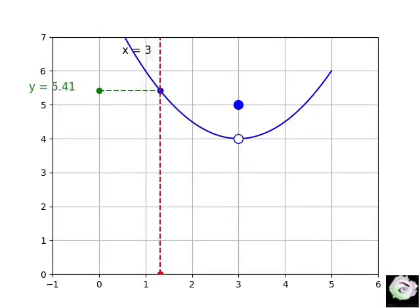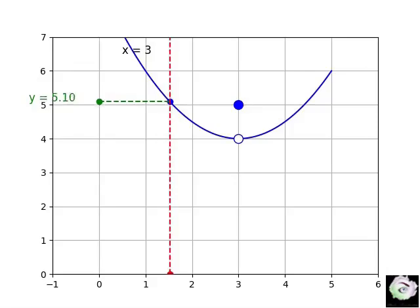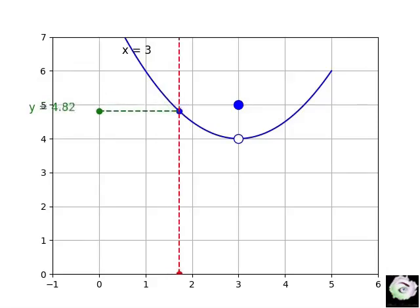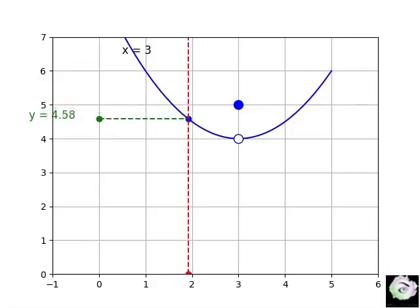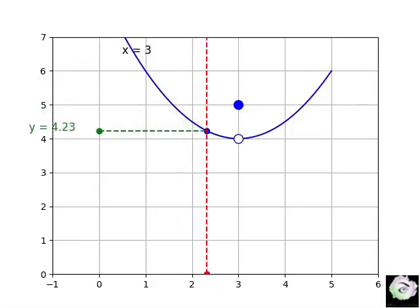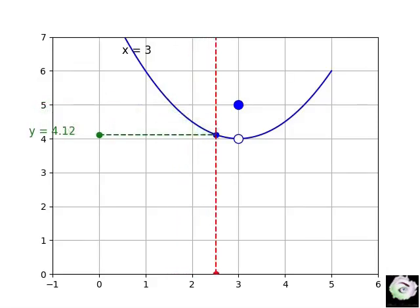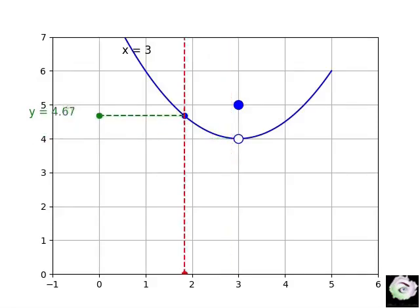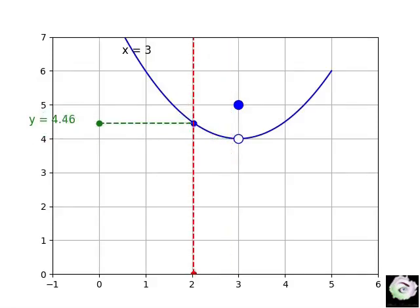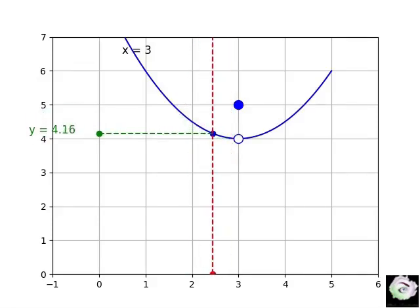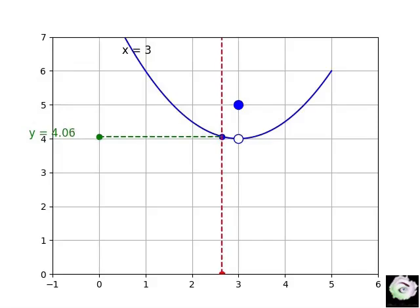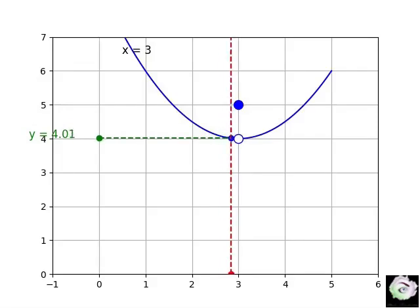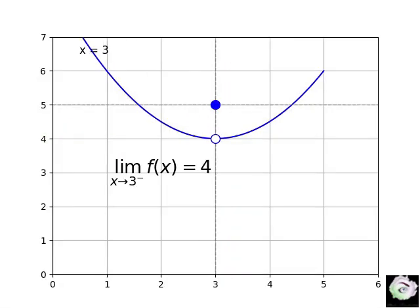Let's observe the movement of the y coordinate as x moves toward 3 from the left. We can see that as x moves towards 3 from the left, y moves towards 4. Therefore, we conclude that the left limit of f at 3 is 4. We denote it by symbols as: lim as x approaches 3 from the left of f of x equals 4.